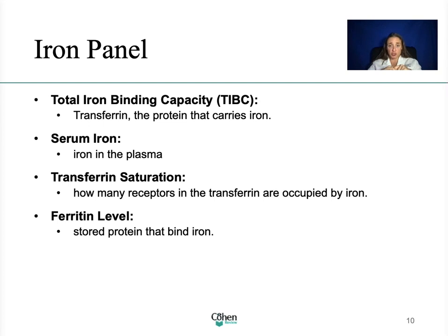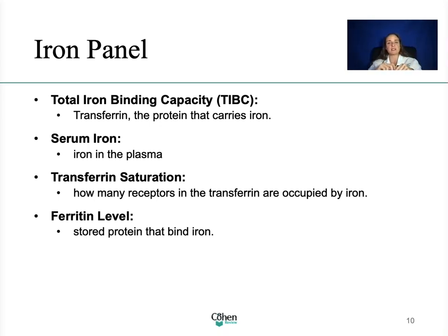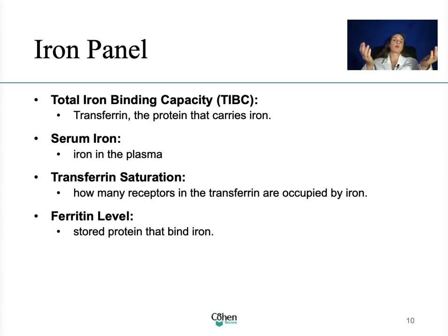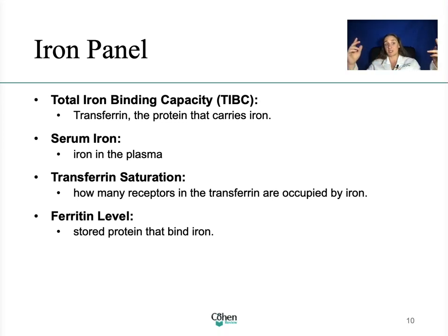In addition to the iron panel, you should also order a B12 level and a folate level. Depending on the MCV results in the CBC — MCV being the size of the cells — if it's less than 80, you're thinking microcytic anemia such as iron deficiency or thalassemia. If the MCV is greater, you may be thinking more of folate or B12. But don't only order those depending on MCV — sometimes the MCV may be normal and you may still see a micro or macrocytic anemia. The iron panel helps diagnose iron deficiency anemia, thalassemia, anemia of chronic disease, acute phase reaction anemia, iron overload (hemochromatosis), porphyria, and B12 deficiency.